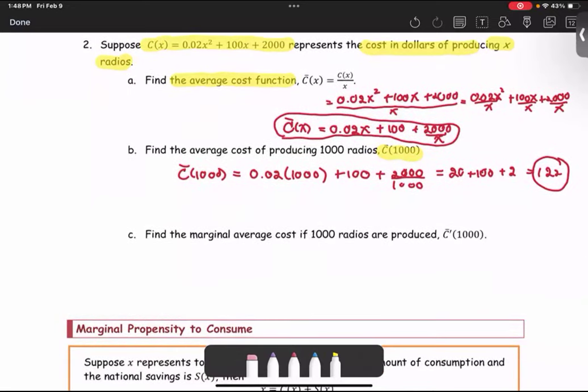In part C, we're going to find the marginal average cost if 1000 radios are produced, or C̄'(1000). We got C̄(x) in part A. The marginal average cost means we find the derivative of C̄(x).